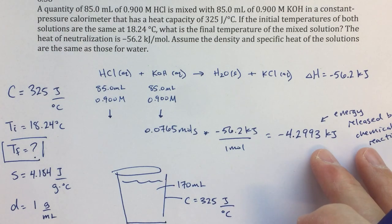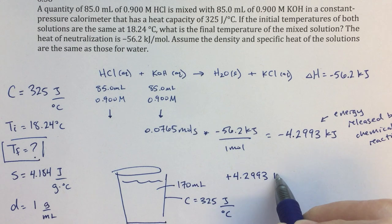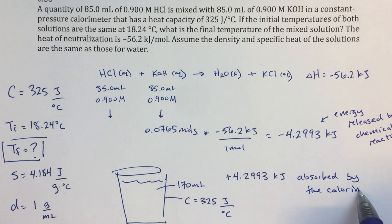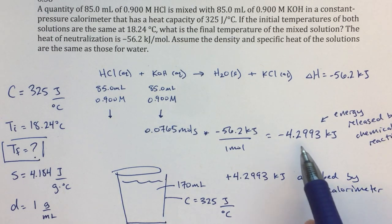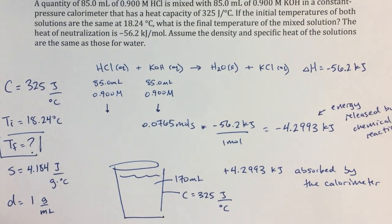So now we're going to apply this energy to the actual calorimeter. So the way that I would do that is first I'm going to change the sign. I'm going to say positive 4.2993 kilojoules is absorbed by the calorimeter. So this same amount of energy that is evolved is going to be absorbed by the calorimeter. And then we're going to apply that to change the temperature and figure out what the final temperature is going to be.